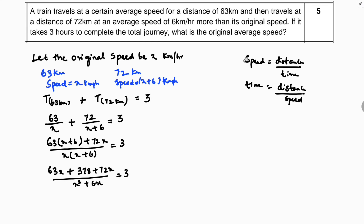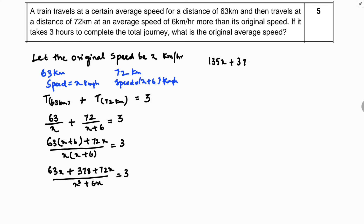Cross multiplying: 135x + 378 = 3(x² + 6x). Expanding the right side: 135x + 378 = 3x² + 18x. Rearranging: 3x² + 18x - 135x - 378 = 0.